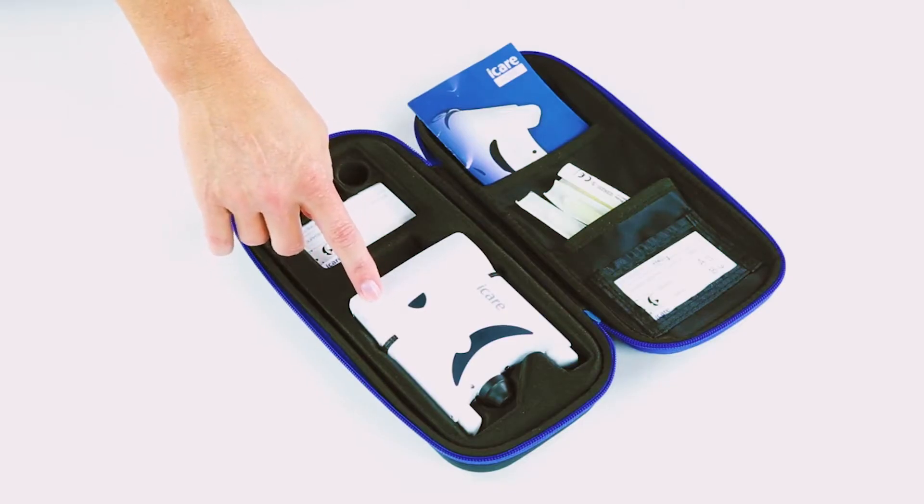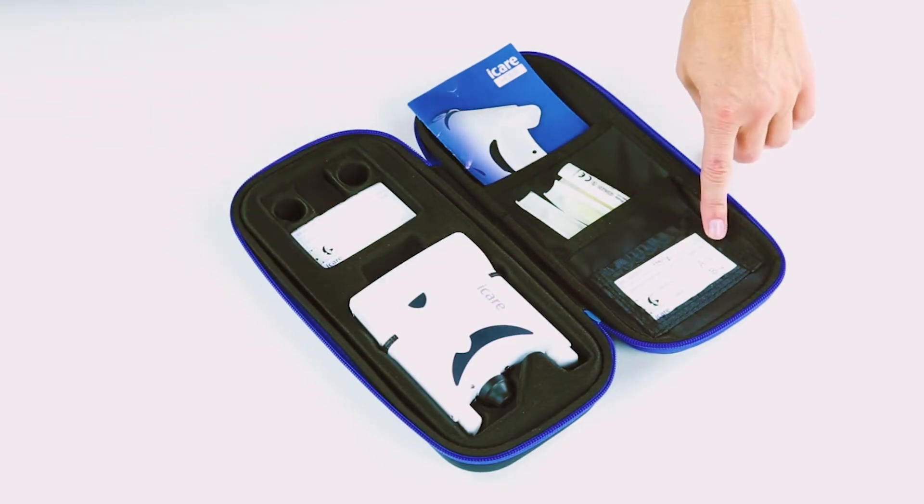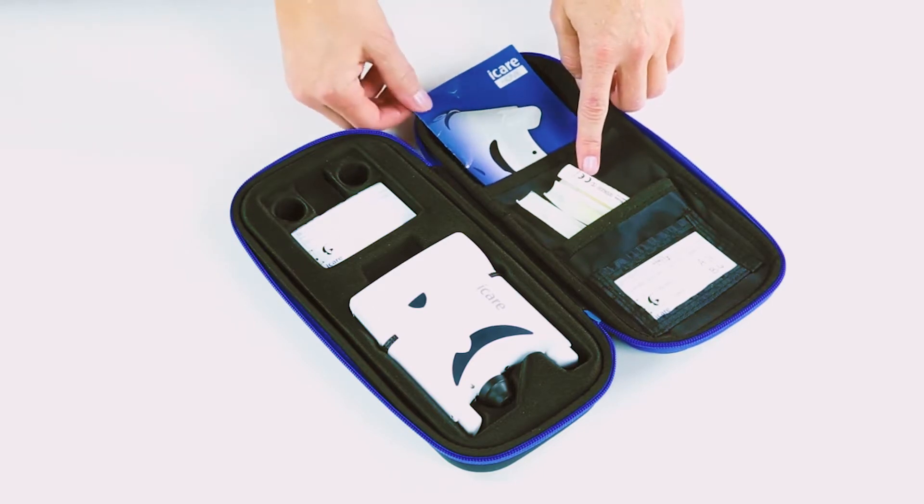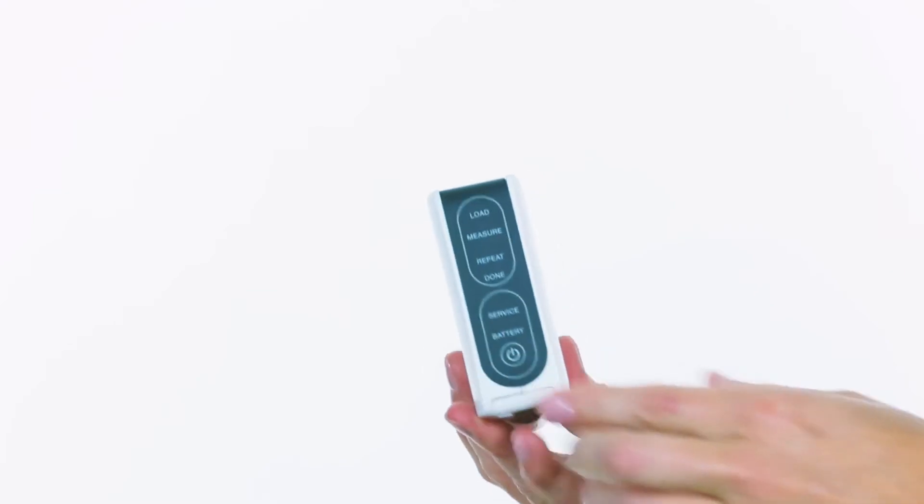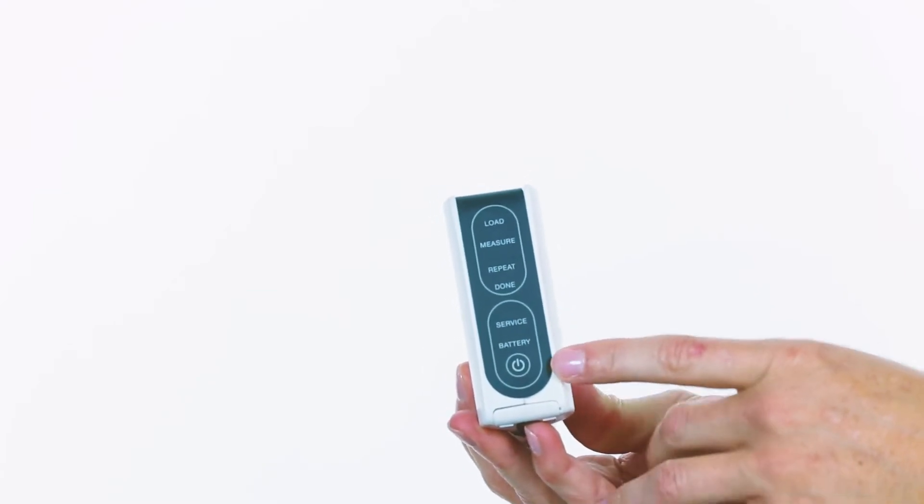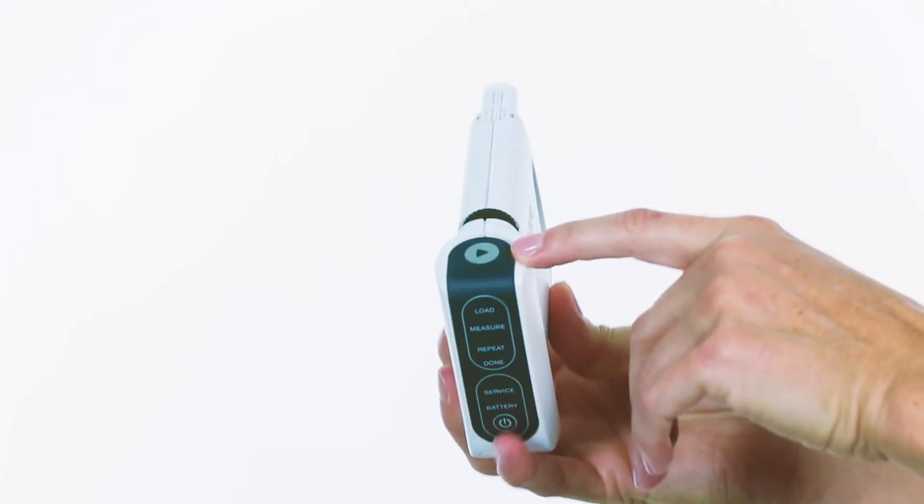iCare Home Tonometer, personal support positions, probes, patient guide. Parts of the home tonometer: power button, display screen, measurement button.